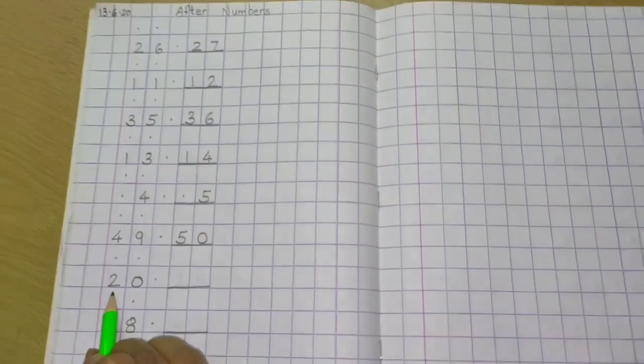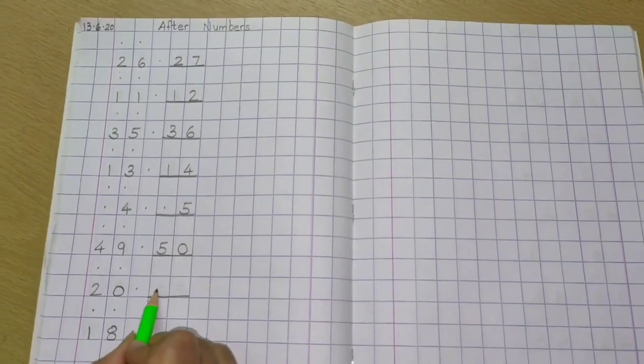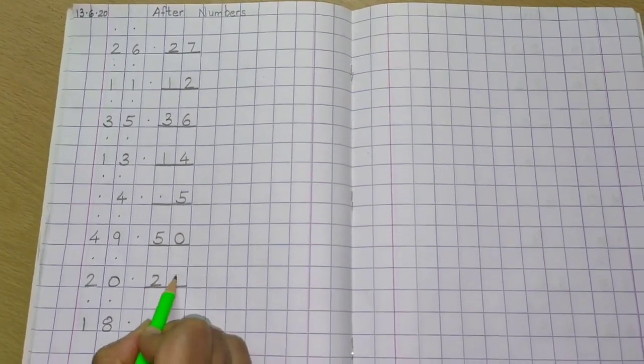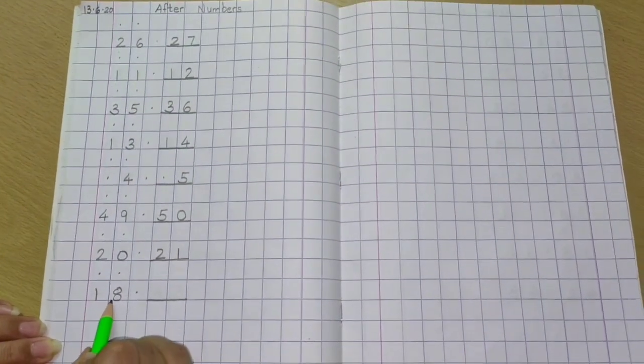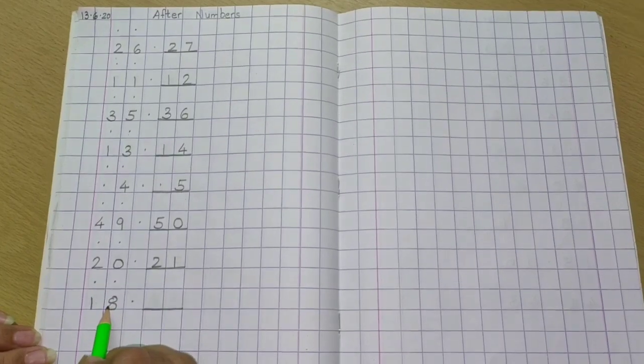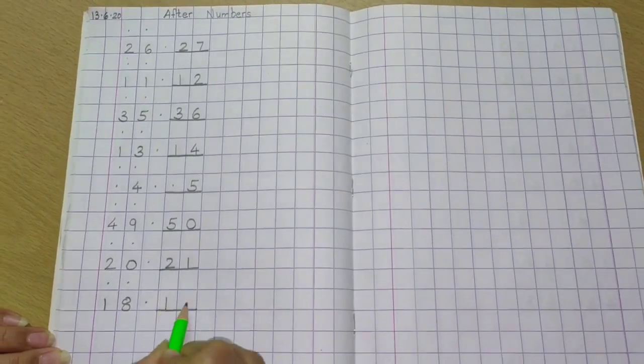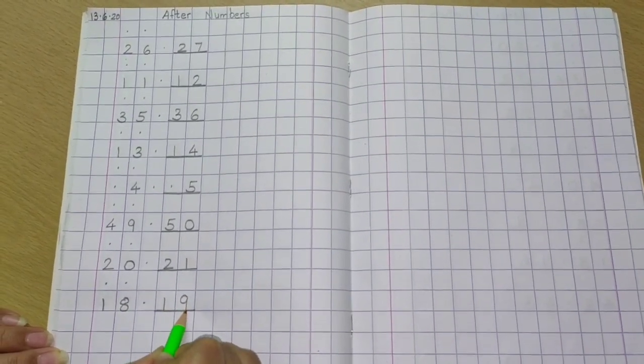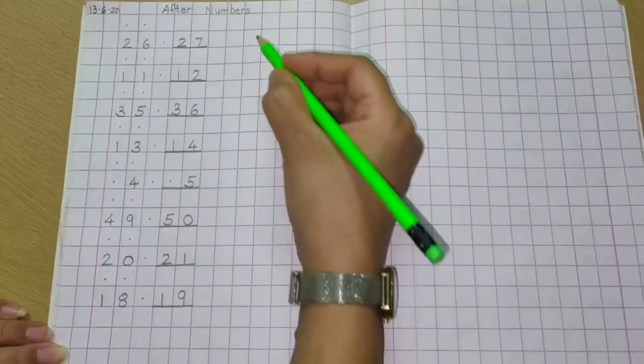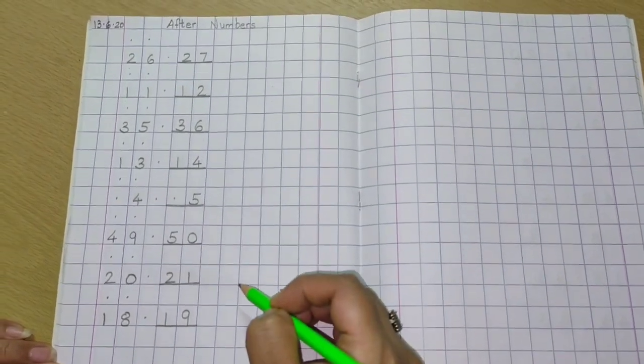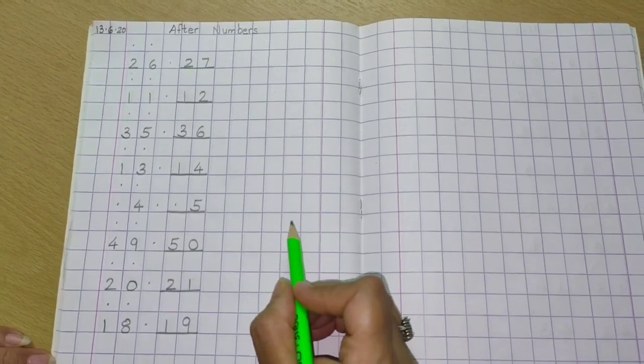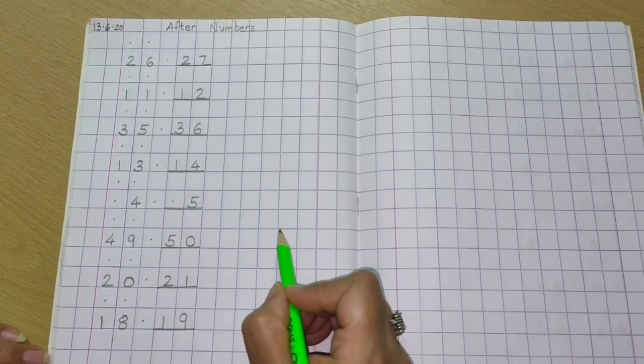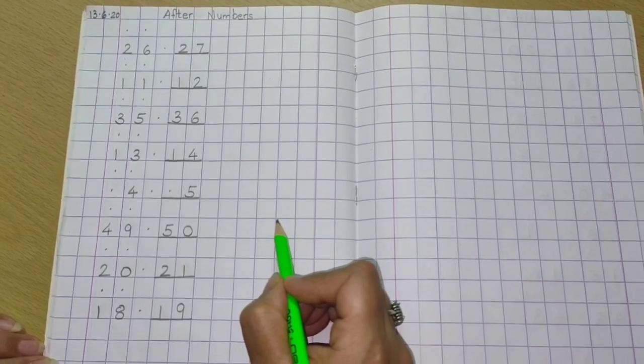After 20. Good. 21. And then after 18 will come, yes children, yes, 19. So this is the answers to all of today's practice work. I hope you all have understood after numbers very nicely. Keep practicing at home children. Okay.